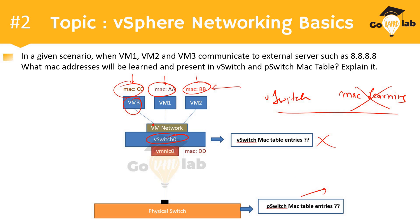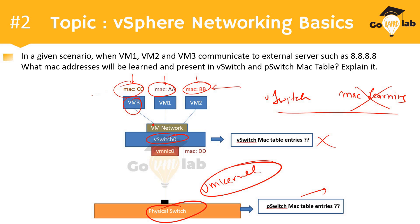When we talk about the physical switch, it needs to learn MAC addresses because it is not part of the VM kernel — it's an external entity. Whatever MAC address is assigned to your virtual machine, your physical switch will not be aware of it by default. You have to make your physical switch aware of virtual machine MAC addresses so it can forward packets to the correct virtual switch port for VM communication.